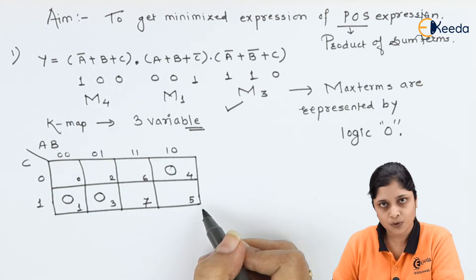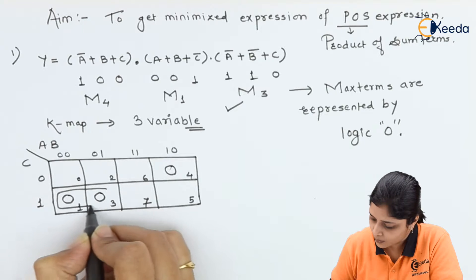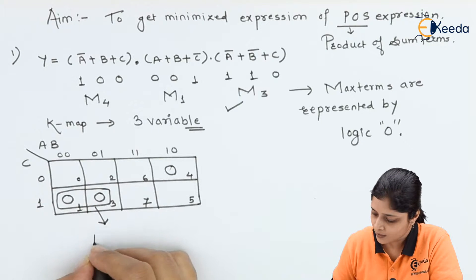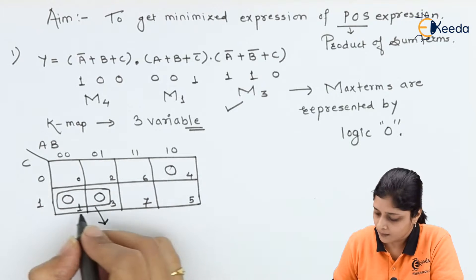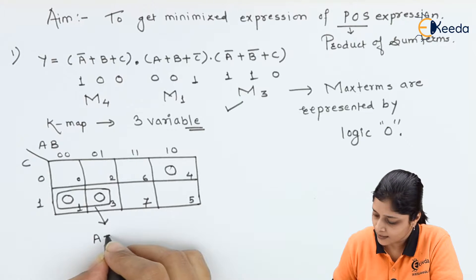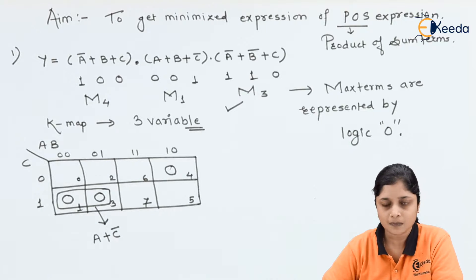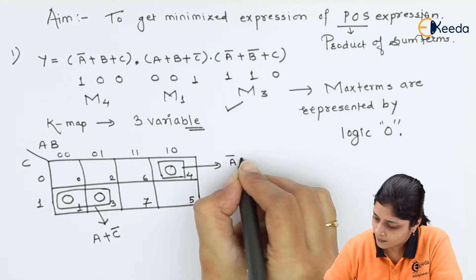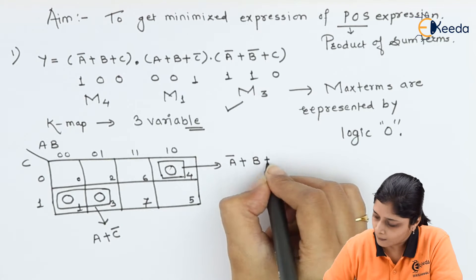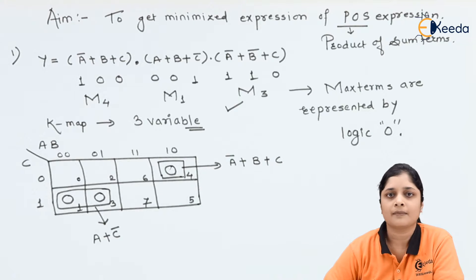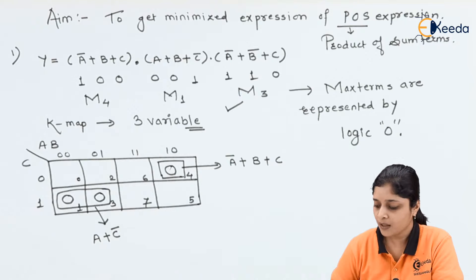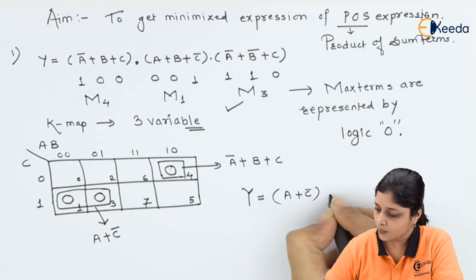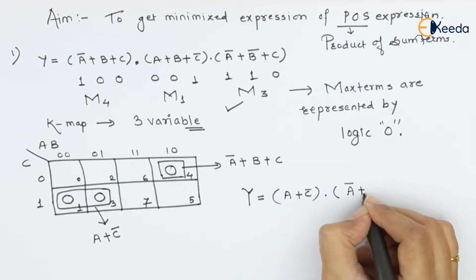Grouping starts — search for 8 zeros: no. 4 zeros: no. 2 zeros: yes. We can make a group of two zeros. A is the same, B is changing so don't consider it, and C is 1, so we write (A + C̅). The remaining zero gives us (A̅ + B + C). Finally, the answer is Y = (A + C̅) · (A̅ + B + C). This completes example one.